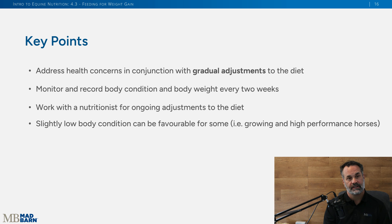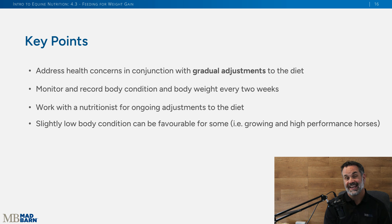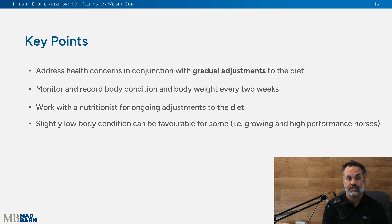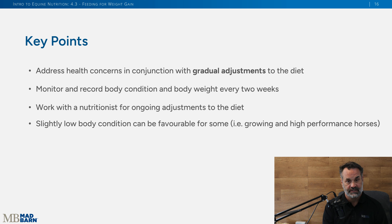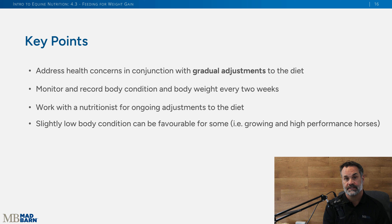To summarize: always address health concerns first, then make gradual adjustments to the diet over a period of two to three weeks — don't make drastic changes overnight. Monitor the horse over time, body condition score every two weeks, and take pictures. Work with a qualified nutritionist, especially with any issues regarding your horses and their diets, as that's an excellent source of information.